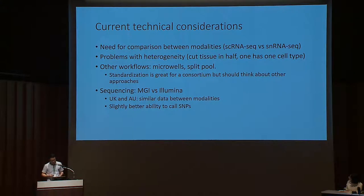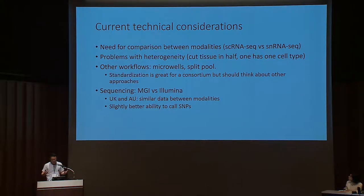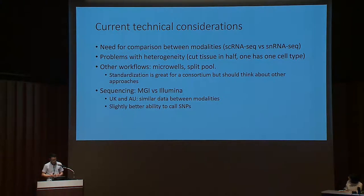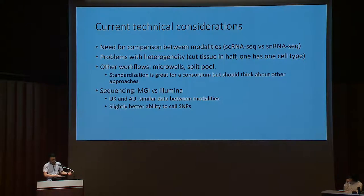There's a point about problems with heterogeneity. One thought was to take a piece of tissue, slice it in half, and compare two assays — but that turns out not to be trivial because you could take a piece of tissue, slice it in half, especially tumors, and capture only one cell type in one half and not in the other.